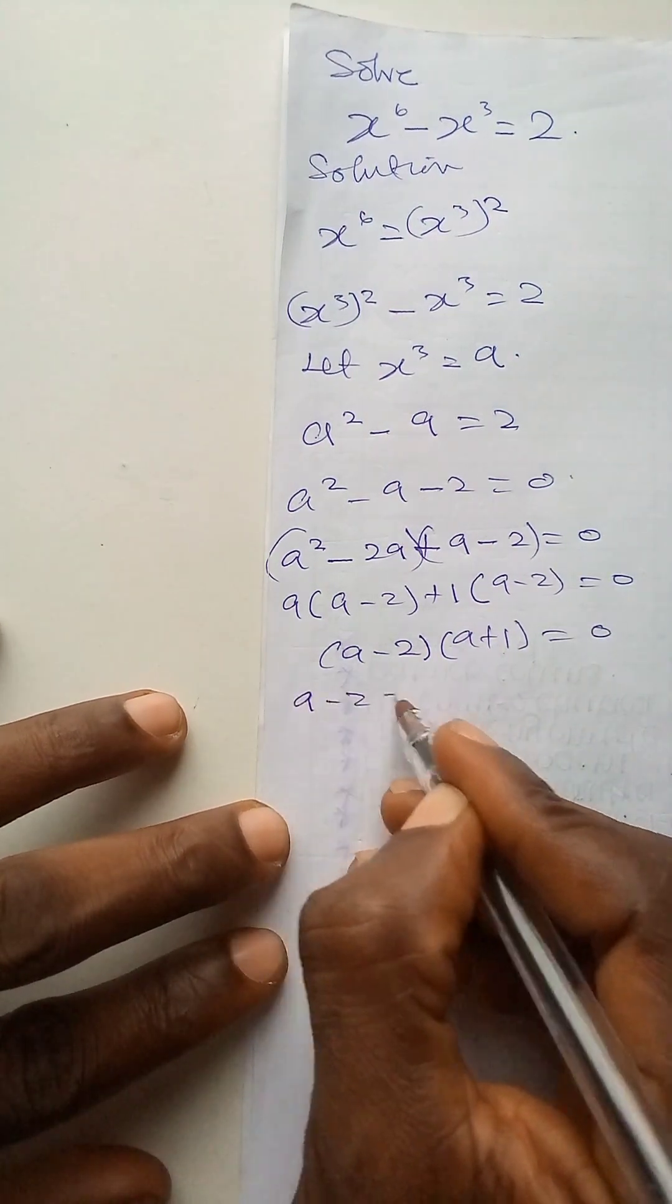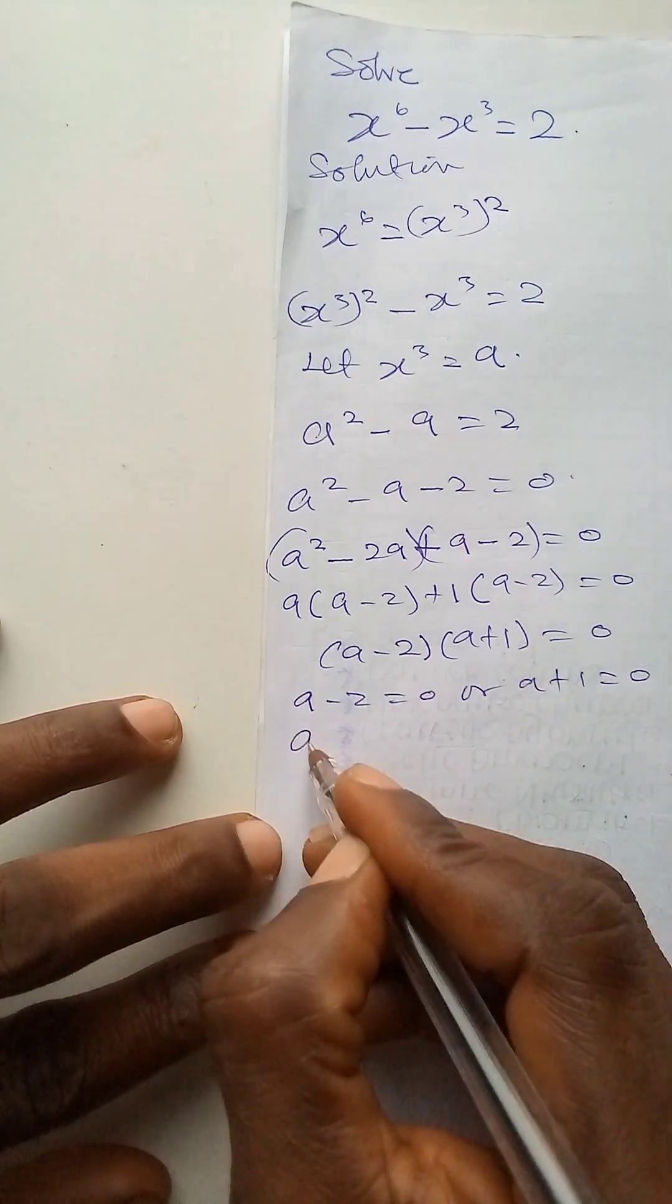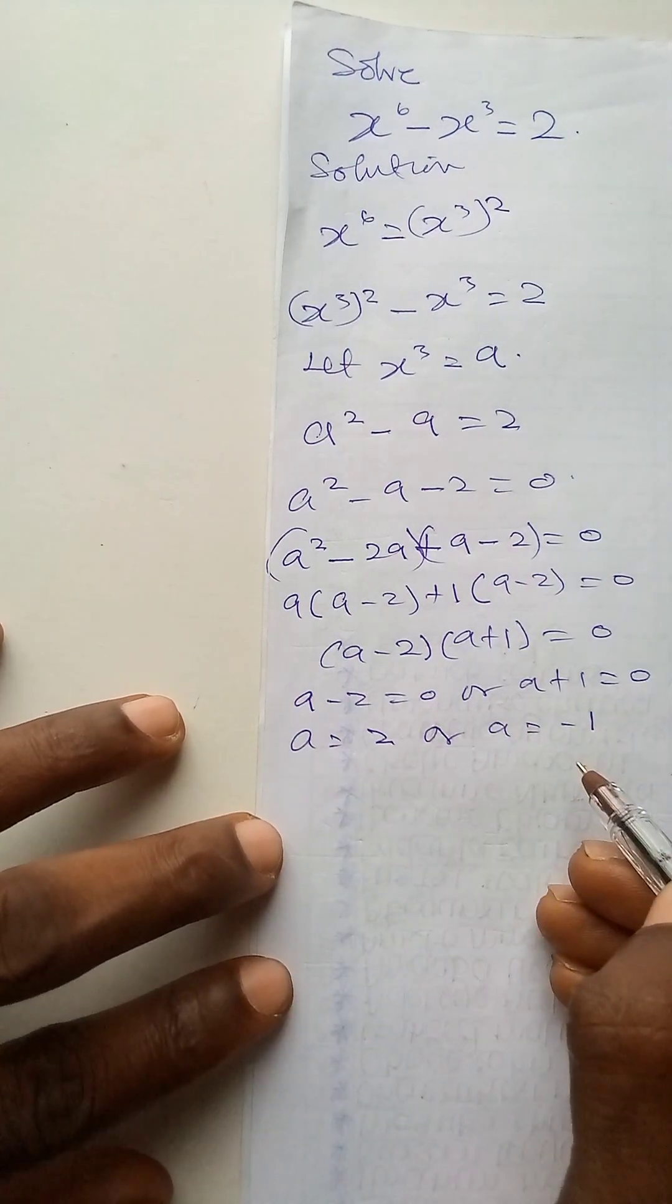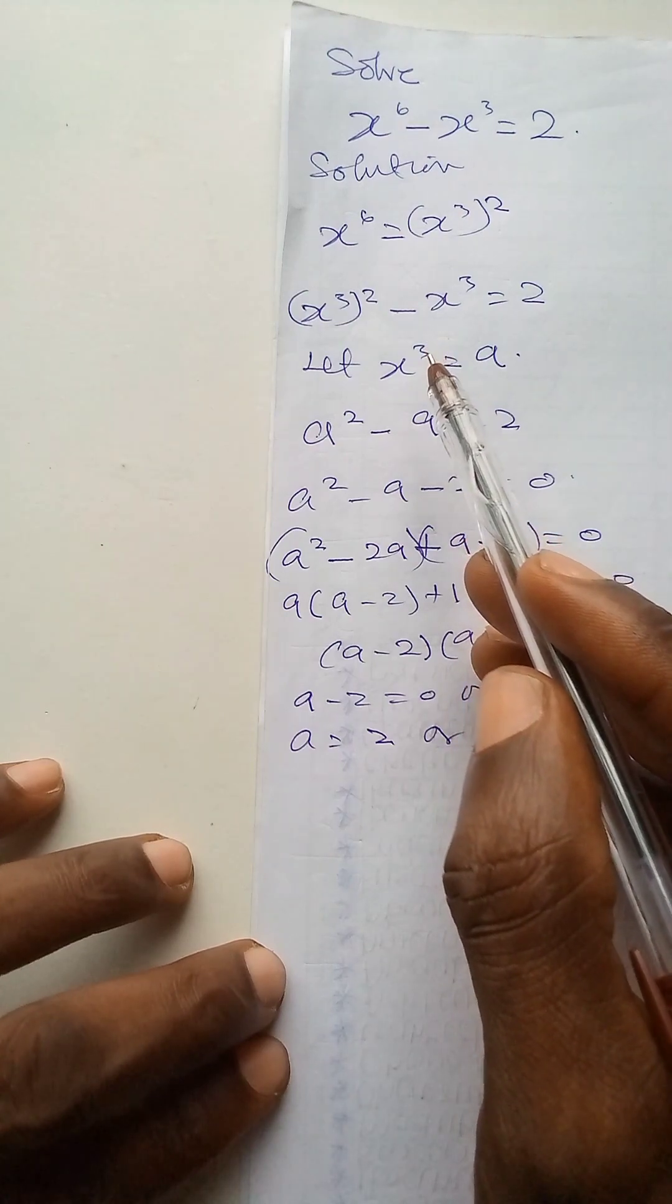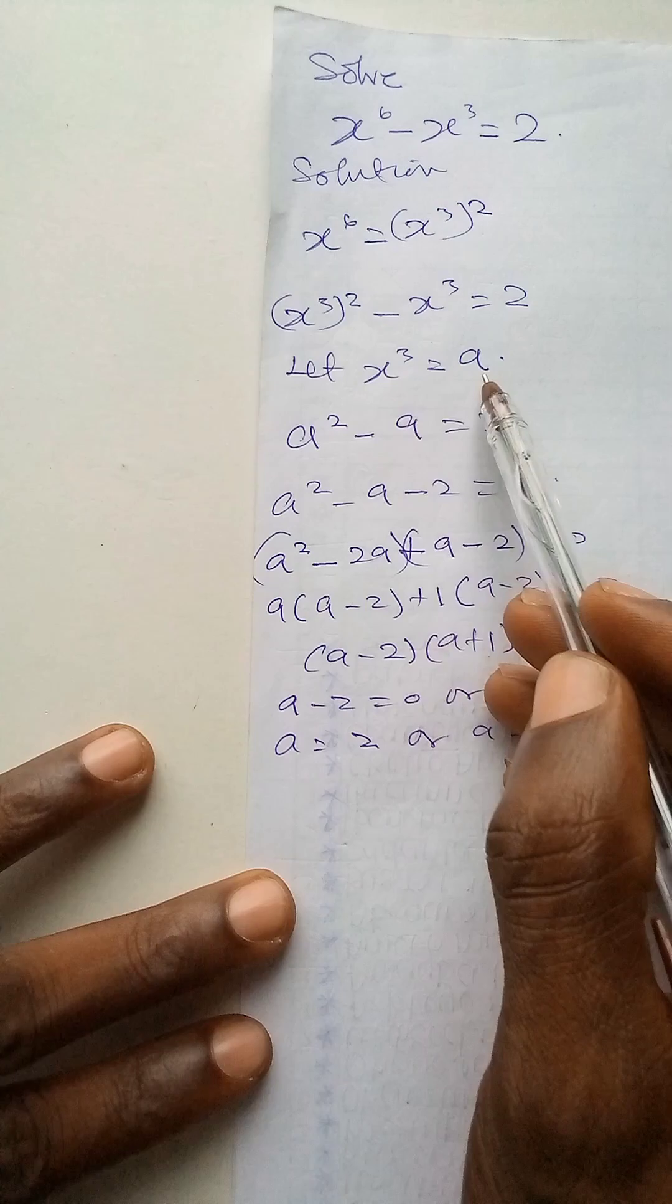So my a minus 2 is 0 or a plus 1 is 0. a will now be 2 or a is minus 1. This is not the final answer. Let us remember that we made an assumption. The assumption is that x raised to power 3 is a.